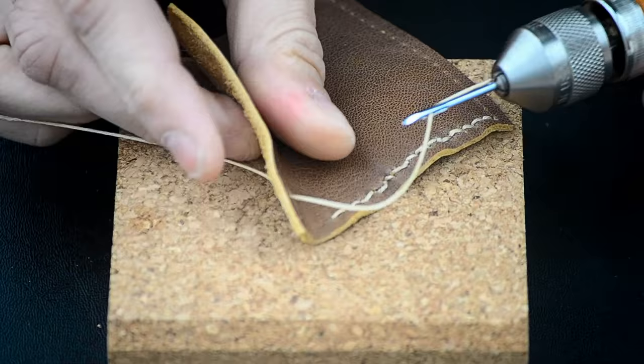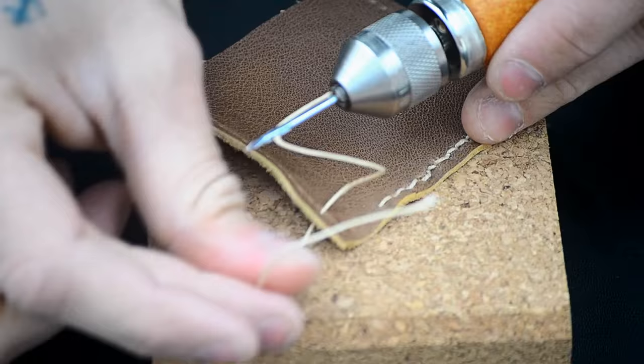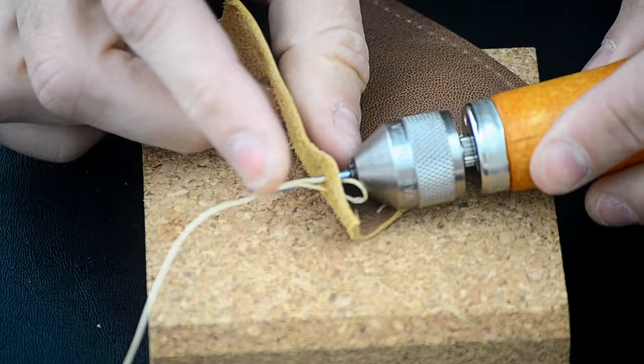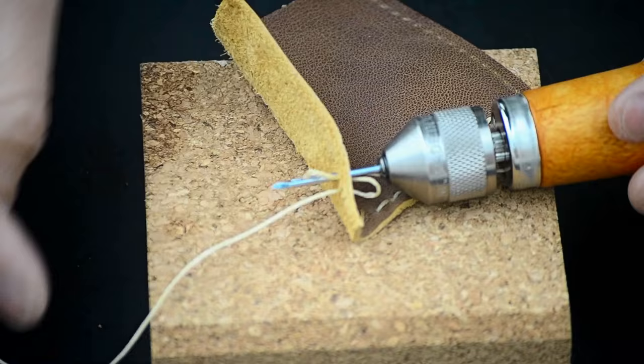Now press the needle through again at whatever your determined stitching gap will be. Press it all the way through and then slowly pull the needle back to reveal a loop on the side of the needle opposite to the groove. Now take your thread and simply pass it through the loop.